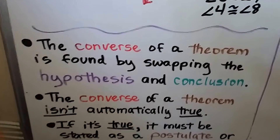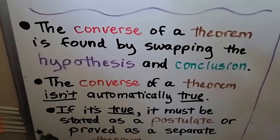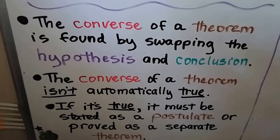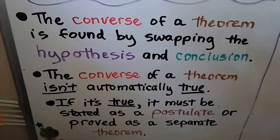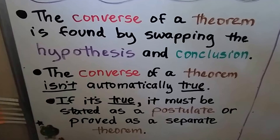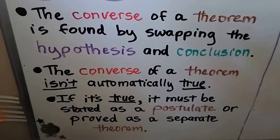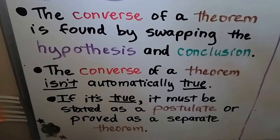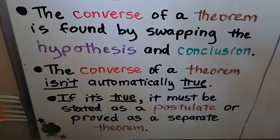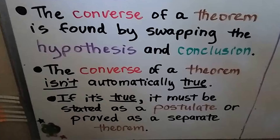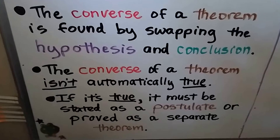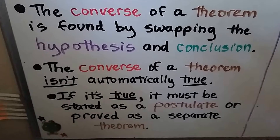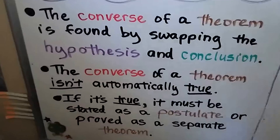The converse of a theorem is found by swapping the hypothesis and conclusion. The converse of a theorem isn't automatically true. If it's true, it must be stated as a postulate or proved as a separate theorem. We'll talk about that a little bit more.